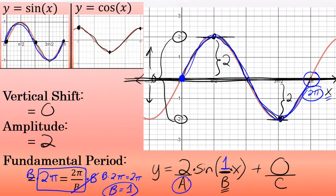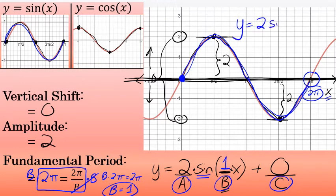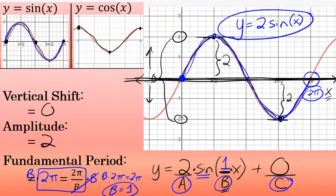So I've found a is 2, b is 1, and c is 0, and I've identified this as a sine wave. Since b is 1, I don't need to write 1x — I can just write x. And since c is 0, I don't write plus 0. The final equation for this graph is y equals 2 sine of x.